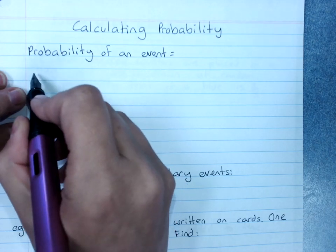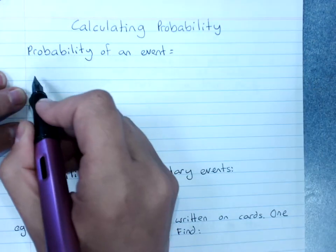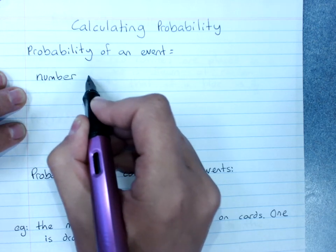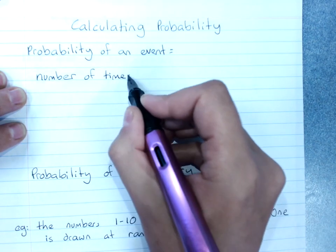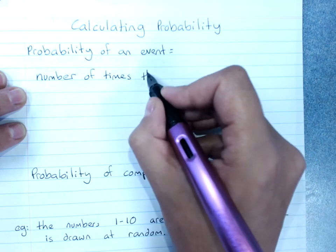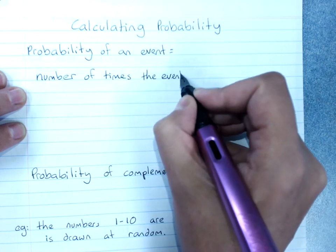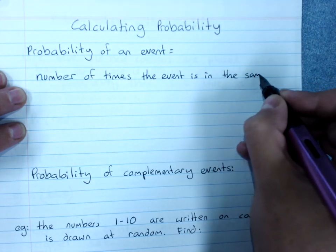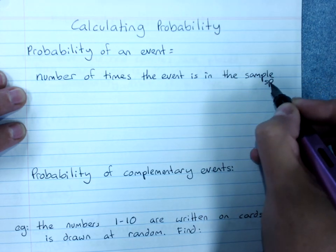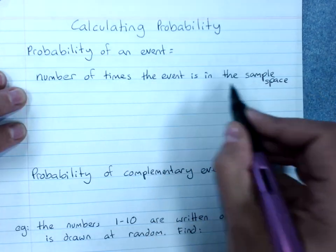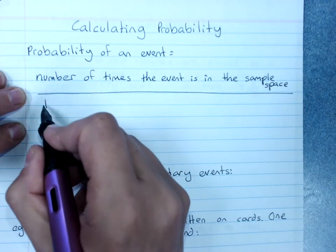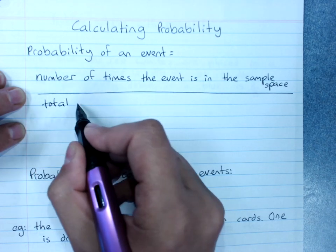We put, so I can't even fit it in here, it's going to come down here, the number of times that the event is in the sample space. A lot of people will talk about that as being the number of ways that event could happen, divided by the total number of outcomes in the sample space.